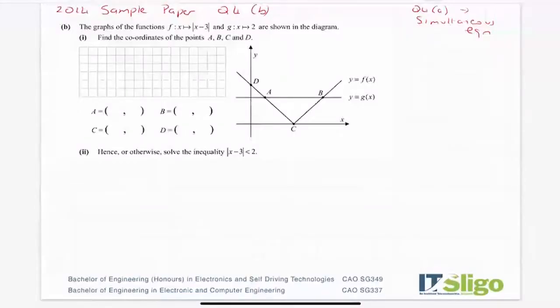Right, the 2016 sample paper, question 4b. Again, I just have a note there - part A of this one happened to be a simultaneous equation as well. But question 4b said the following: The graphs of the function f(x) is the modulus of x minus 3, and g(x) is 2, as shown in the diagram.